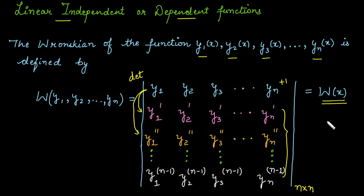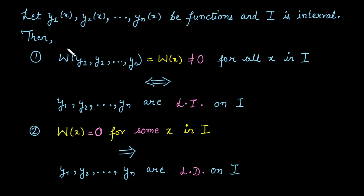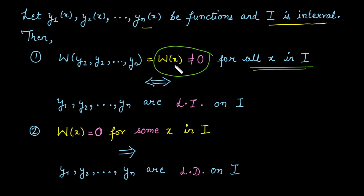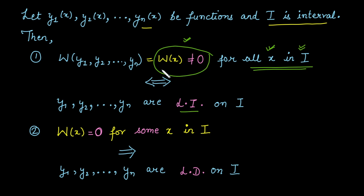There are two results. If we have n functions on an interval i, and the Wronskian W(x) is not equal to 0 for every value of x in the given interval i, then the given functions are linearly independent. Conversely, if the functions are linearly independent, then the Wronskian is definitely not equal to 0 for every value of x in the given interval. This is a two-way result.